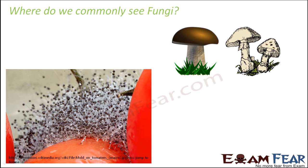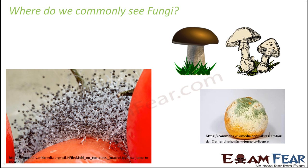Not only that — if you have ever seen a rotten bread, you can see a layer with a cotton-like appearance on the surface of the bread, and that is also fungi. You look at any rotten thing and you will be able to see fungi. For example, in this picture you can see molds on a rotten orange — the greenish layer forming is due to the growth of molds. Molds, yeast — these are all examples of fungi.